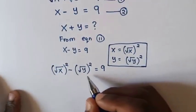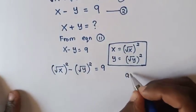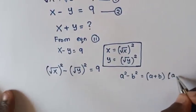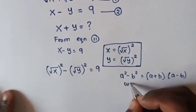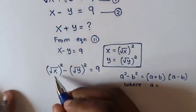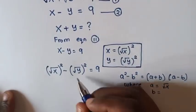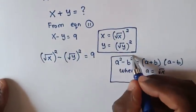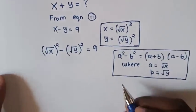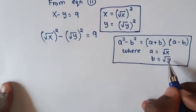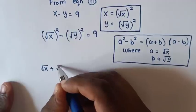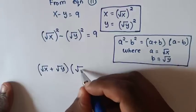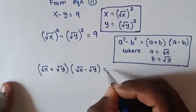From this equation, we recognise it is in the form a squared minus b squared, which equals (a + b)(a − b), where a is square root of x and b is square root of y. So it becomes: (square root of x + square root of y) times (square root of x − square root of y) equals 9.